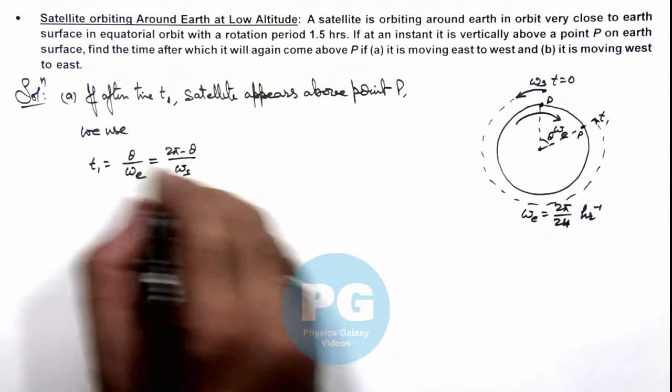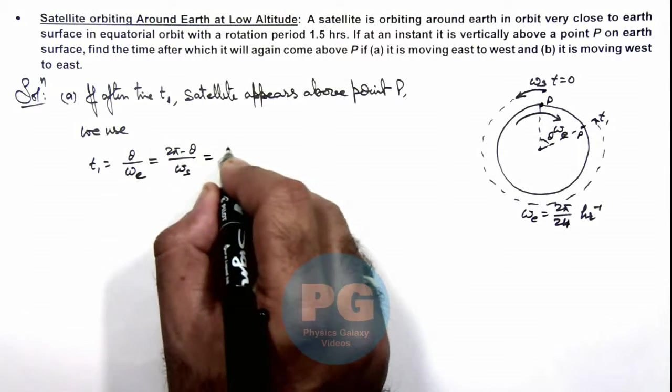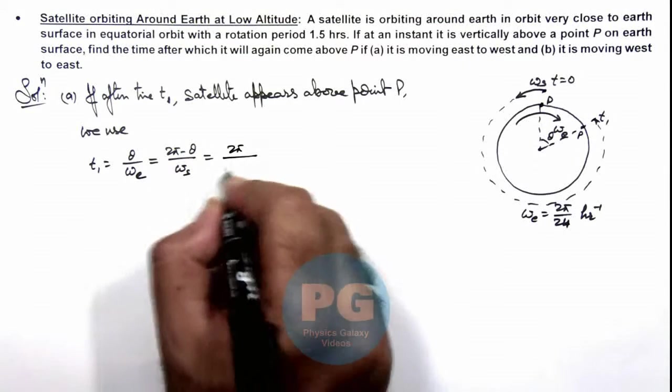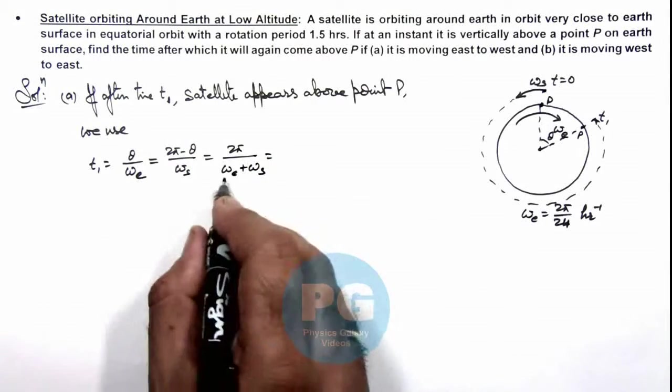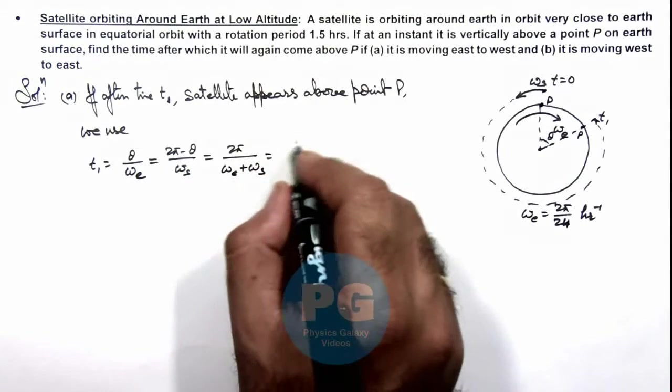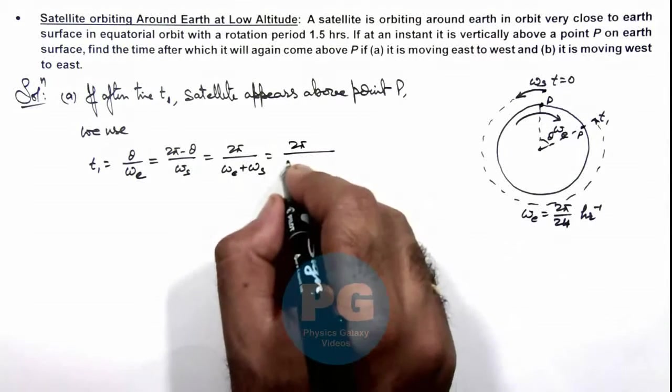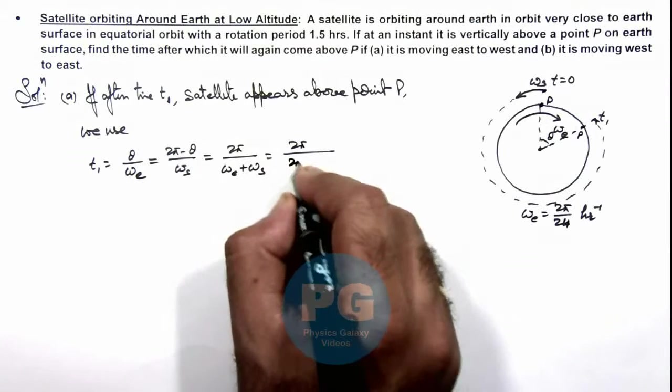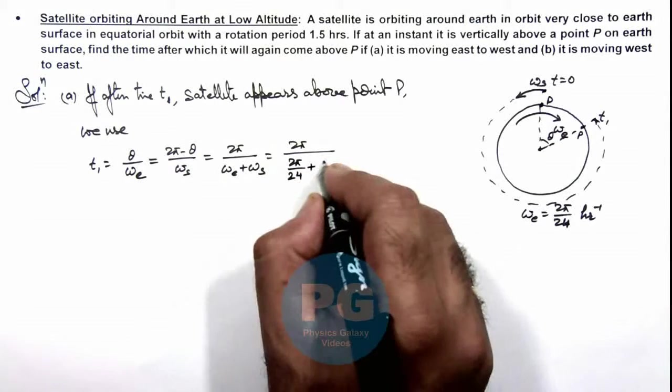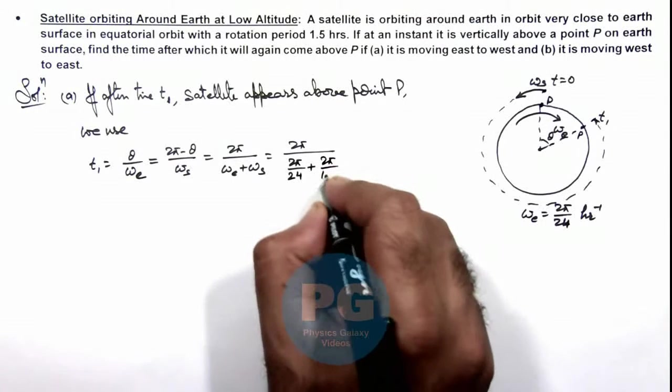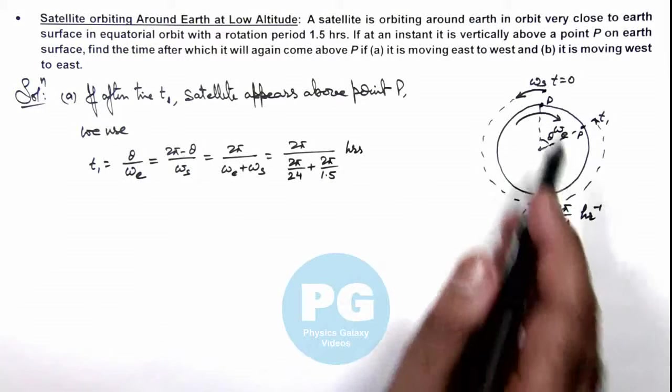Now in this situation if we add the numerator and denominator this gives us 2π/(ωₑ+ωₛ), and we can substitute the values of ωₑ and ωₛ, which is 2π divided by ωₑ=2π/24 hours plus ωₛ=2π/1.5 hours, and this much number of hours will be the time taken.